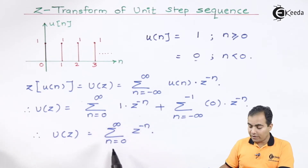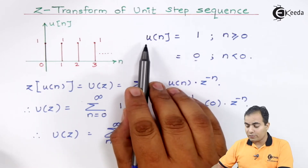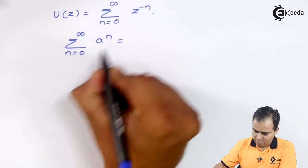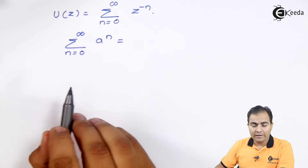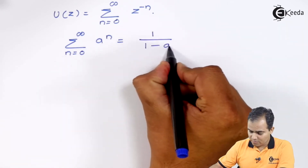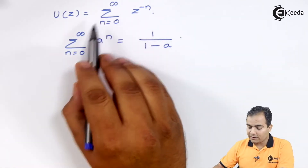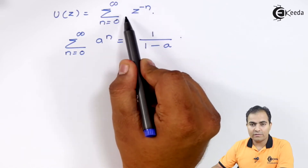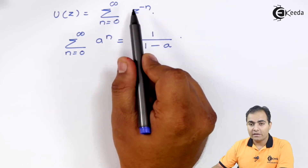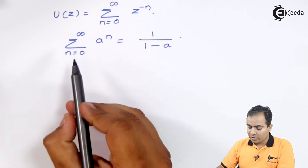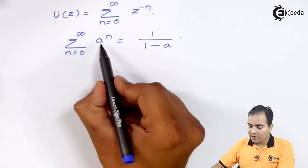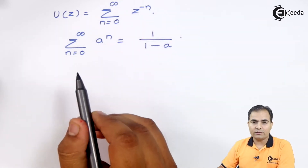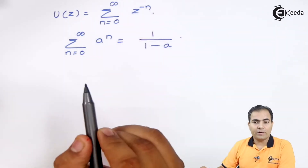To find the Z-transform, we have studied one formula: the summation from n = 0 to infinity of a^n equals 1/(1 − a). Here we have the same summation structure. If we write z^(−1) inside the bracket raised to the power n, we can treat z^(−n) as a^n where a = z^(−1). Both formulae match when we compare them.